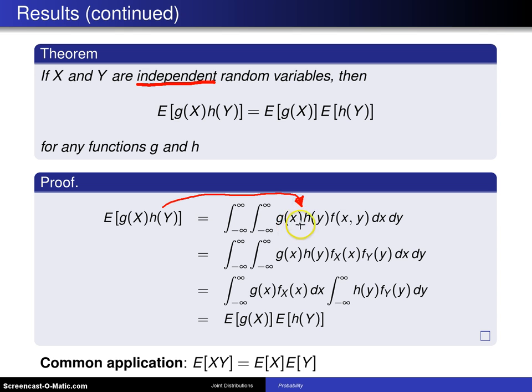This will be g of x times h of y times the joint probability density function f of x, y over the support. And again, you can write from minus infinity to infinity on both intervals because wherever you're outside of the support, you have a zero right here for the probability density function.